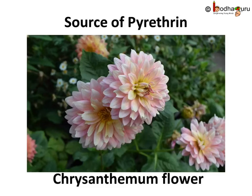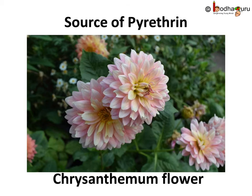Pyrethrin, extracted from the Chrysanthemum flower, is an excellent natural insecticide and insect repellent, which attacks the nervous system of insects. It is less toxic to humans, hence safer than other insecticides. That was just nitrogenous waste.